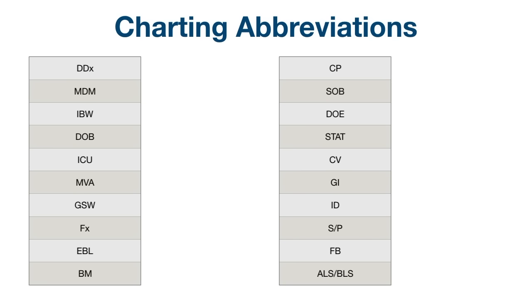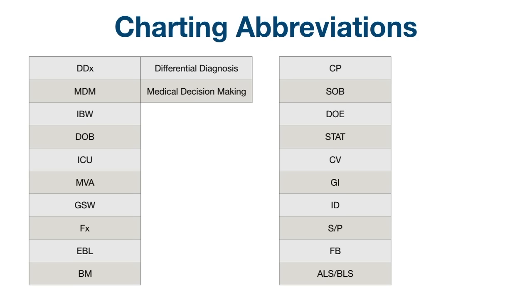Next, we have another round of abbreviations you might see with charting. Hit pause in the video and try to name as many as you can and then check your answers. DDX stands for differential diagnosis. MDM: medical decision making.